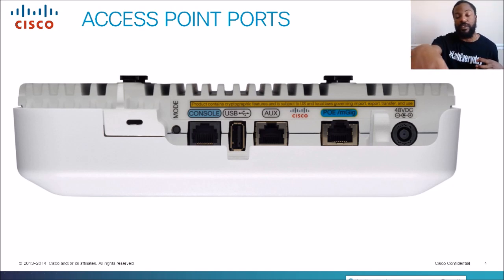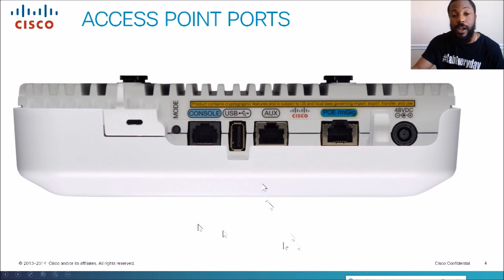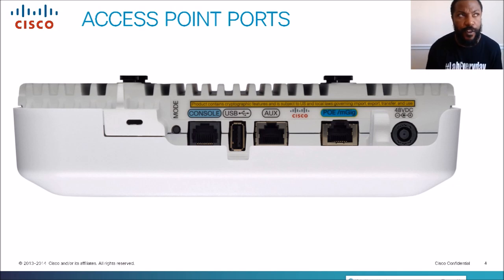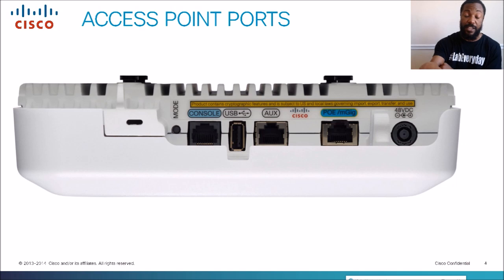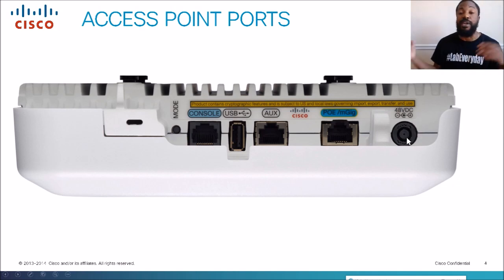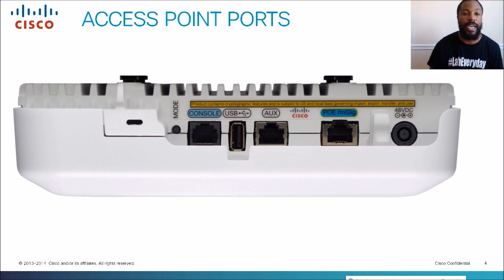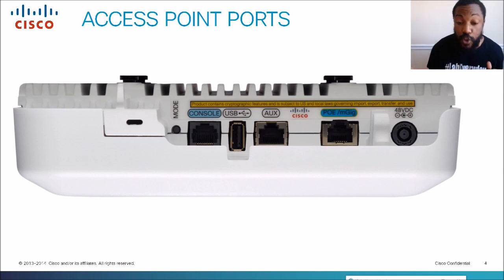We have a USB port where you could put the IOS firmware for the access point. We have an auxiliary port for out-of-band management. We have a PoE gigabit port — this is where you connect your ethernet cable, and PoE stands for Power over Ethernet, so we can power the AP using an ethernet cable. If we don't have PoE, we can still power on the access point using a DC adapter.